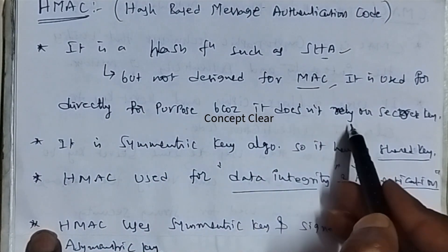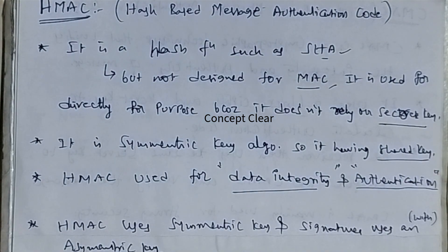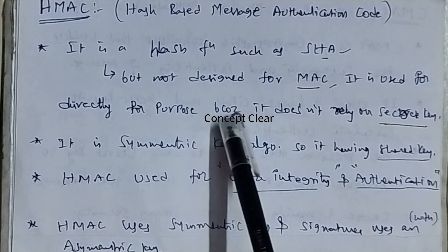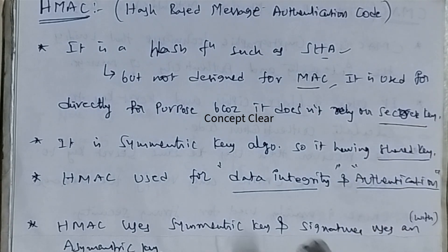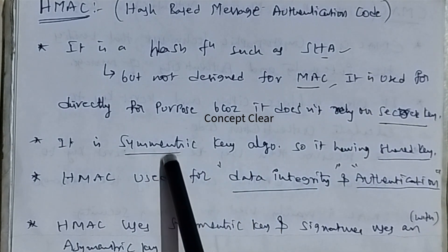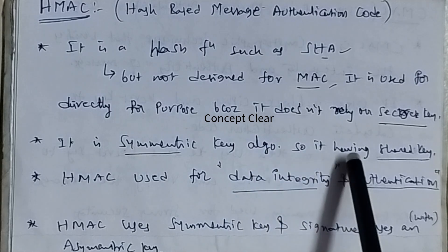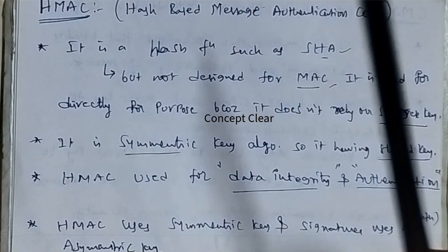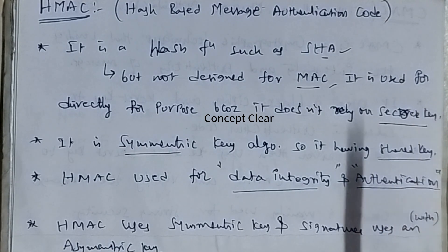HMAC is similar to the SHA algorithm but it does not directly send the secret key. It is a symmetric key algorithm. Symmetric key means the same secret key is used for both encryption and decryption. So it has a shared key — the same key used on the sender side is also used on the receiver side. HMAC is used for data integrity and authentication.